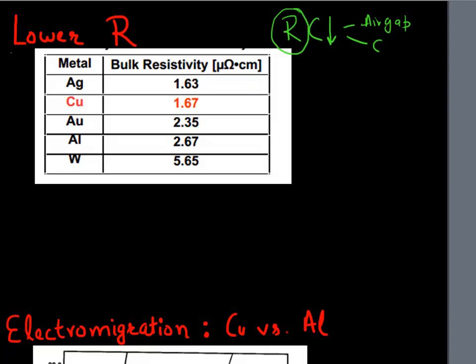So the way we can play around in the material perspective to reduce the resistance is change the material which is used to make these metal lines. So given here is a cheat sheet which lists the resistivity of different, bulk resistivity of different metals.